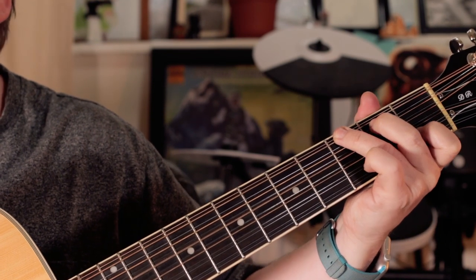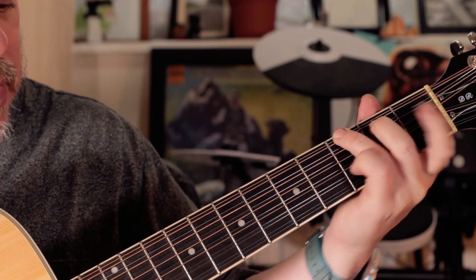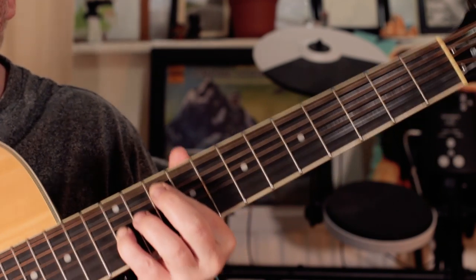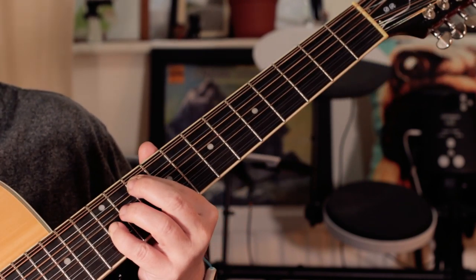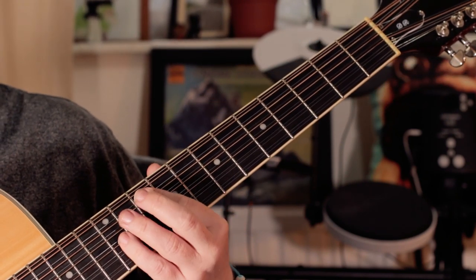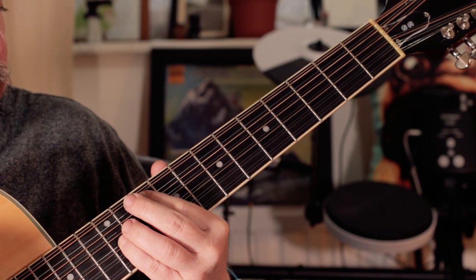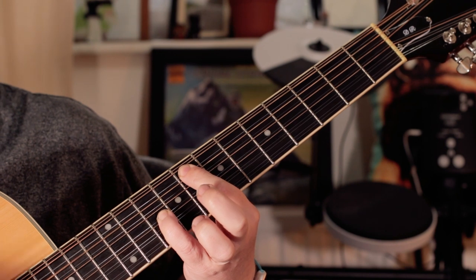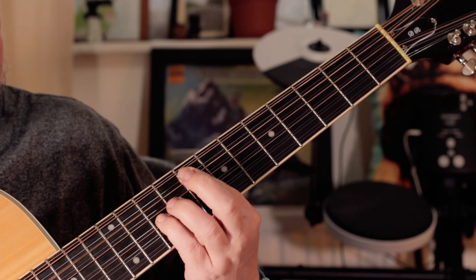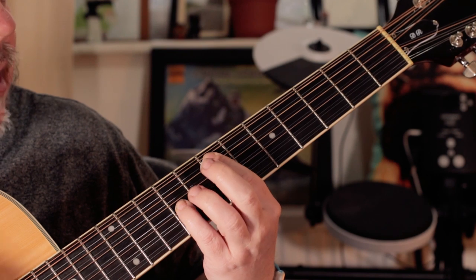And then the G Gsus4 G. So I kind of like to play it, for a bit more, you know, add a bit more meat to it, just play 10 and 12 for the octave G, and then moving down 8 and 10 and then moving down 8 and 10 for an F, then an E 7 and 9.